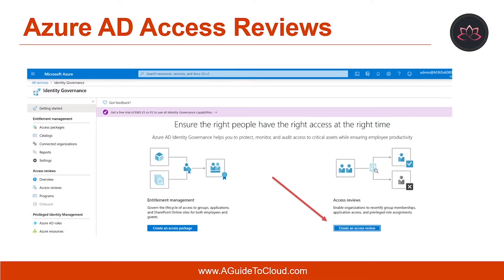Azure AD Access Reviews enable organizations to effectively manage group membership, access to enterprise applications, and privileged role assignments. With access reviews, you can evaluate guest user access by reviewing their access to applications and membership of groups, and you can evaluate employees' access to applications and group membership. You can also collect access review controls into programs relevant to your organization to track reviews for compliance or risk-sensitive applications.